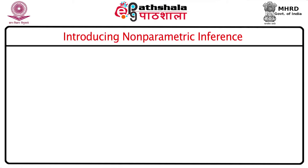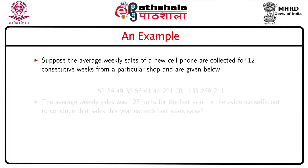But in most cases, the distribution of the data is not known. It may be possible that one adopts some parametric inference or procedure for this type of data and ends up with conclusions that may not be valid. So it is better to start with a real-life example. Suppose the average weekly sales of a new cell phone are collected for 12 consecutive weeks from a particular shop.